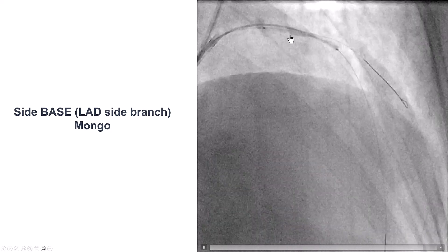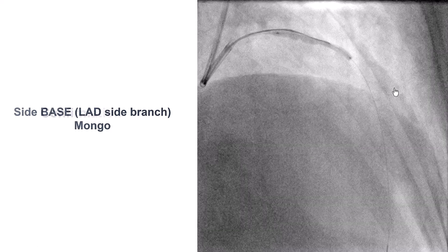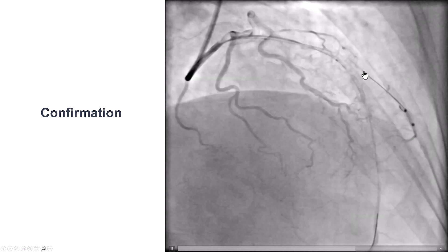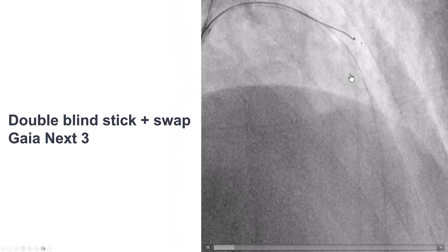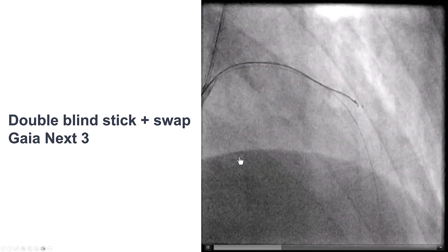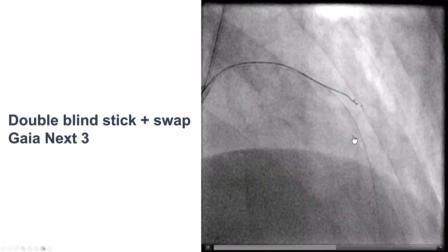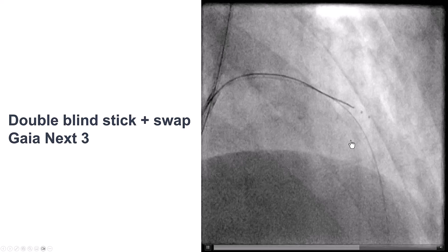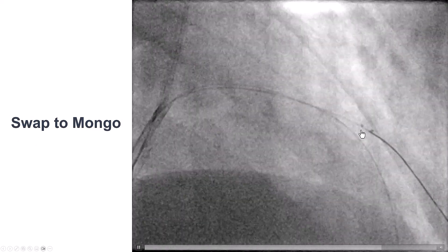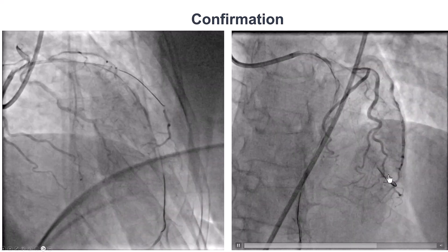We placed a balloon into the LAD and then wired. The wire seemed to separate from the LAD and advance along what appeared to be the course of the diagonal, which was confirmed with contrast injection. However, we were once again in the extra-plaque space. So we performed re-entry again using the same Stingray balloon — the Gaia X3 guidewire was directed proximal to the proximal marker, then redirected to re-enter between the two markers. We then switched to the Gladius Mongo, which advanced nicely, and with contrast injection confirmed crossing into the diagonal branch.